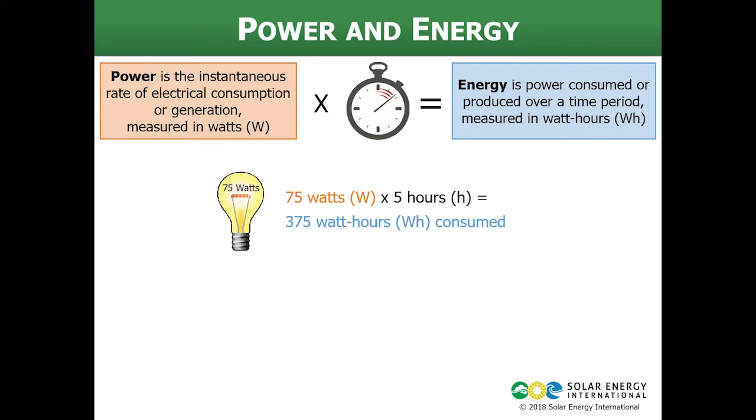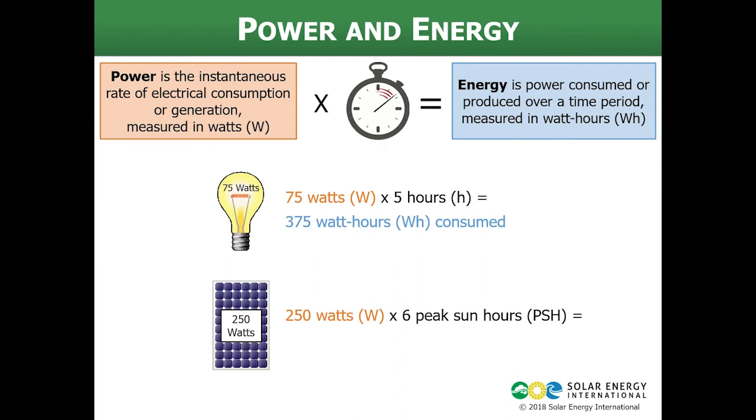Now if we flip that into production, since we're talking about PV systems, if we have a 250 watt module, so that's the power rating of the module, 250 watts, and we have six peak sun hours, over those six hours this 250 watt module will generate 1,500 watt-hours or 1.5 kilowatt-hours.